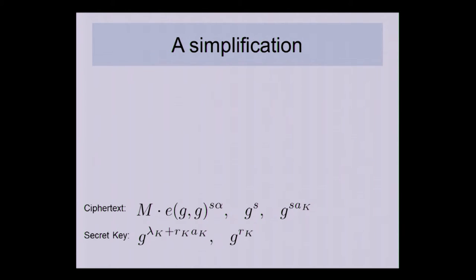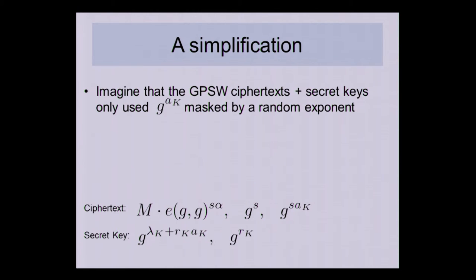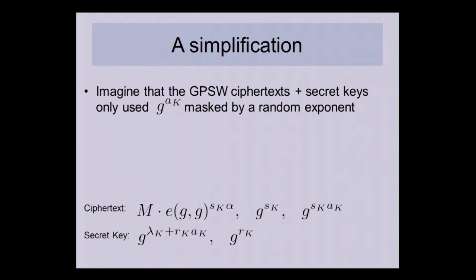Consider a simplification: imagine the GPSW ciphertext and secret keys only ever use g^(a_k) masked by an independent random exponent per attribute — as in the secret key where a_k is masked by r_k for every k. Specifically, imagine we change the ciphertext so it uses an independent s_k per attribute instead of the same s for all k. Now each a_k is masked by an independent random s_k for all k.